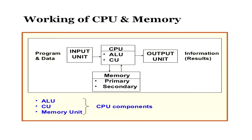This slide shows the basic working of the CPU and memory. As shown in the block diagram, through the input unit programs and data are accepted. The CPU accepts that data with the help of its components — the control unit, ALU, and memory. This data is processed and stored, and finally as instructed by the user, the data is directed towards the output devices for the user to view the results. This block diagram sums up the entire working of the computer along with memory, input devices, and output devices.